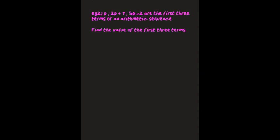Alrighty, let's get stuck into this one. Example 2: p, 2p plus 1, 5p minus 2 are the first three terms of an arithmetic sequence. Find the value of the first three terms. This question is worded differently to our first example and I don't want you to think that this now means we have a new approach. I've asked the same question just in a different way. We still need to figure out what the value of the variable is.